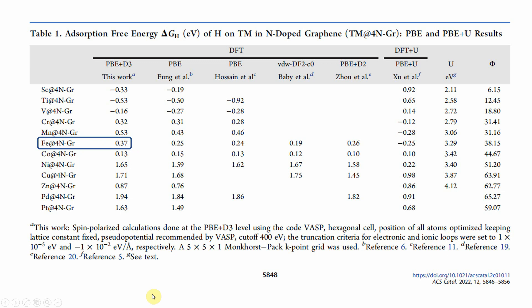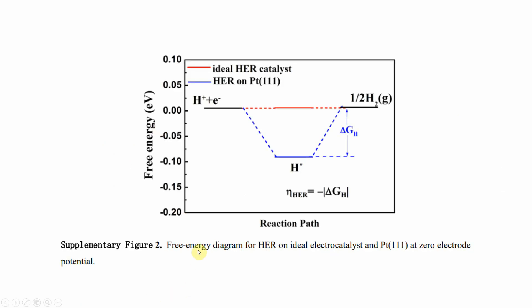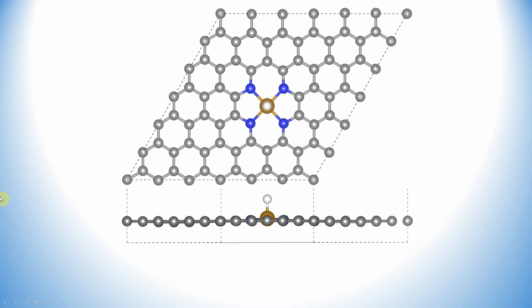This is the free energy diagram for HER — the ideal electrode catalyst and the platinum reference at zero electrode potential. An ideal catalyst should have zero hydrogen adsorption energy — not positive or negative. If the adsorption energy is more positive or more negative than zero, the catalyst will give low performance. This is the calculated binding energy of the platinum (111) system, which is minus 0.09 eV.